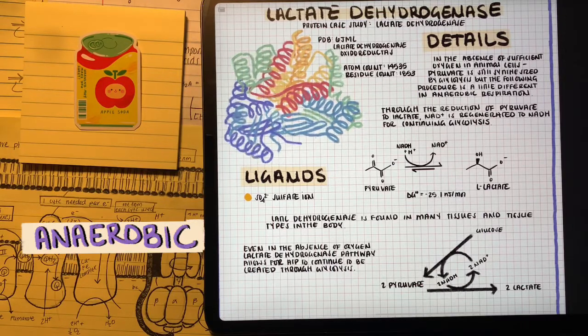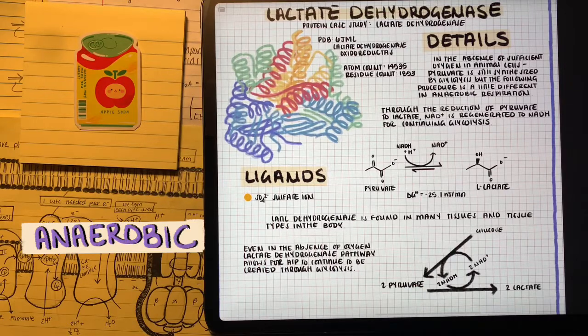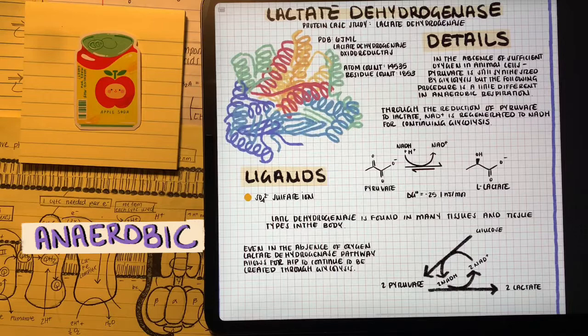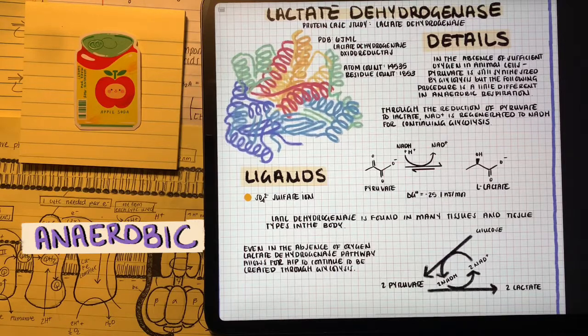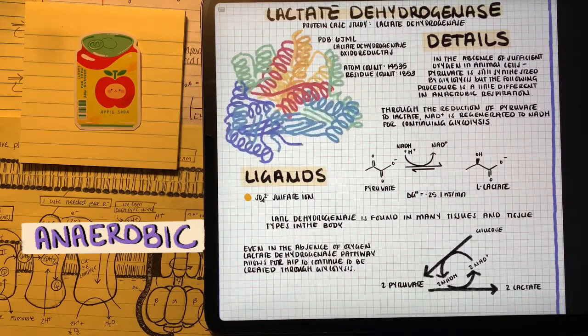It's going to take pyruvate and reduce it to lactic acid. This is going to help us regenerate that NAD+ to help glycolysis keep on going, even though we're not producing as much energy, we're still producing some.